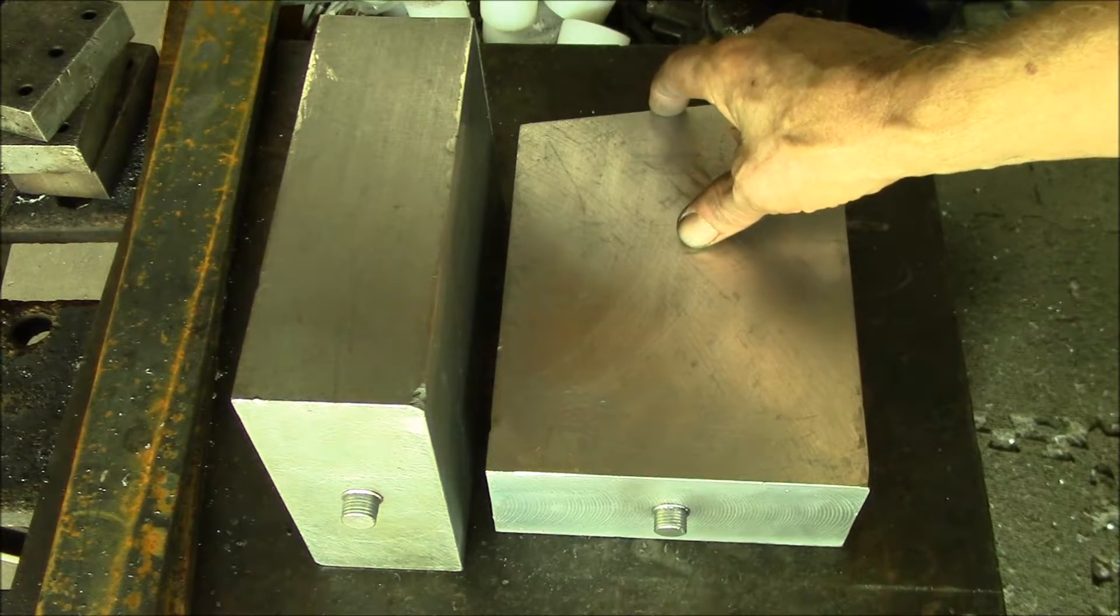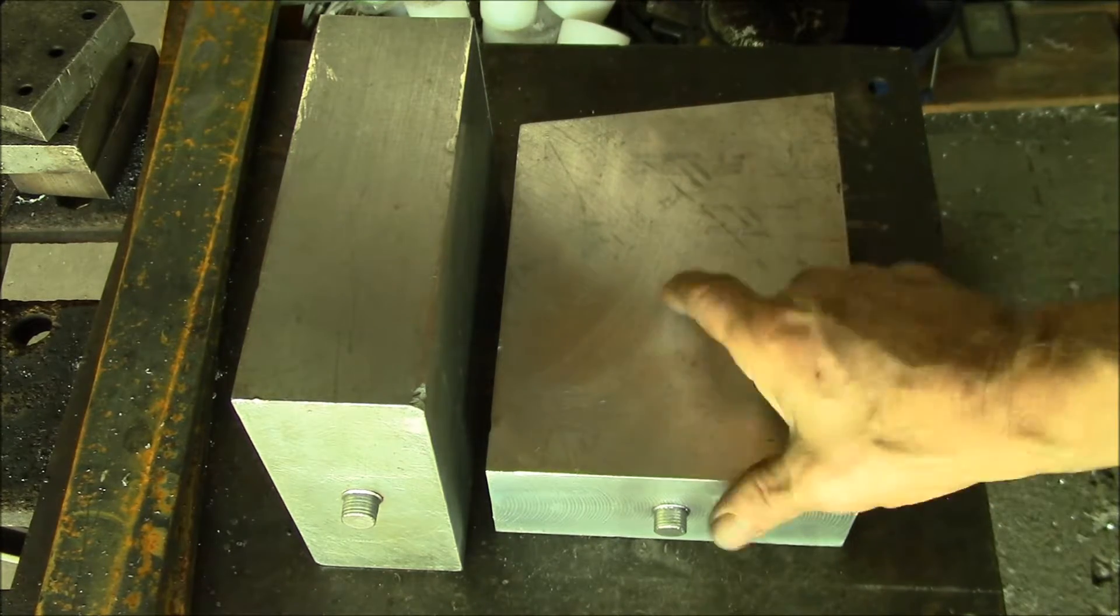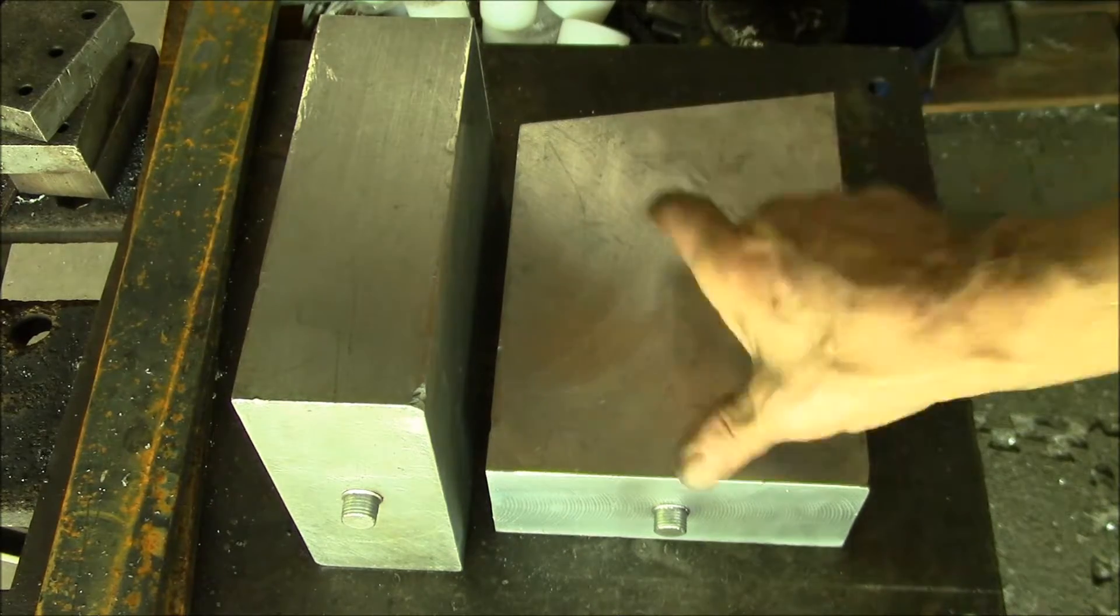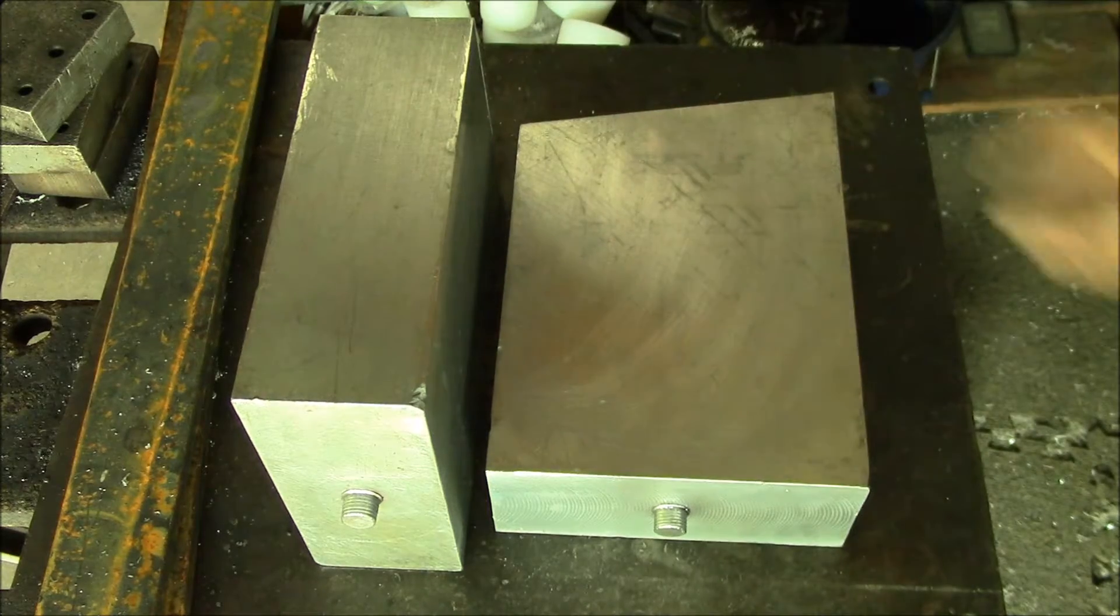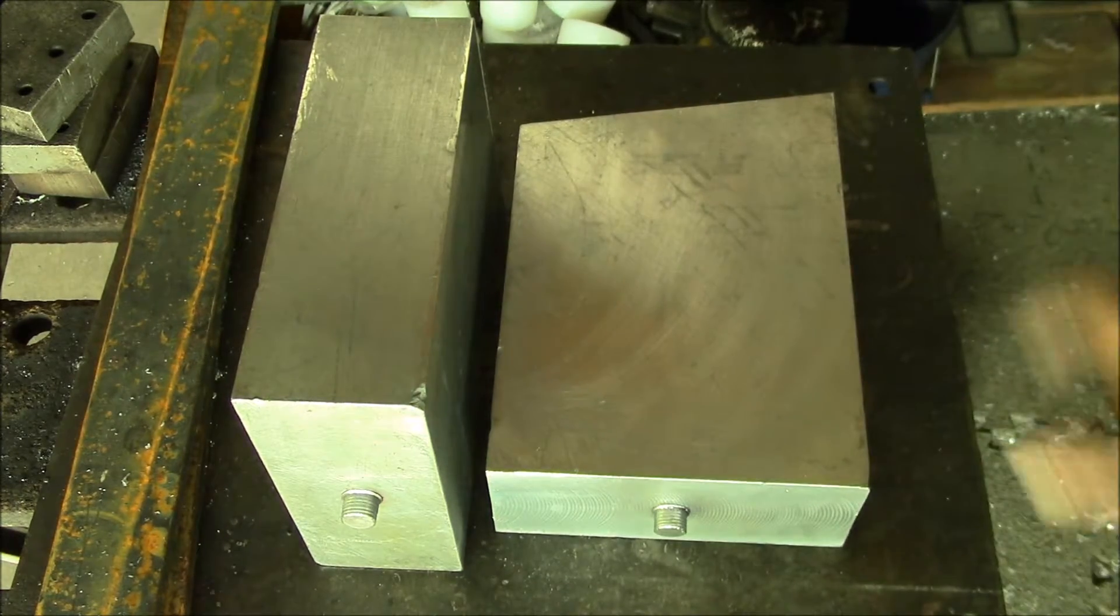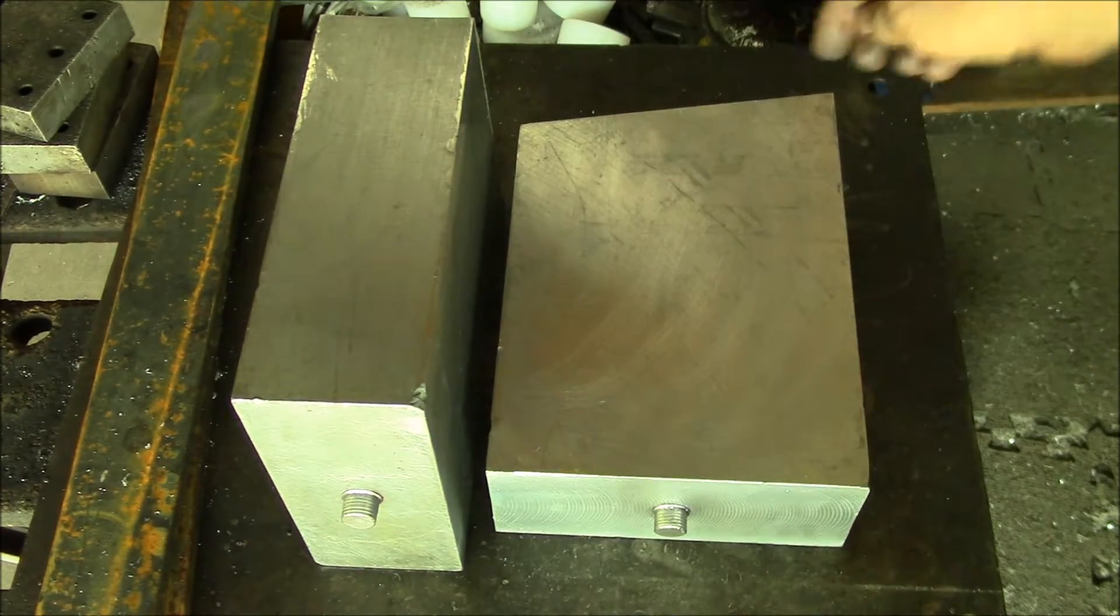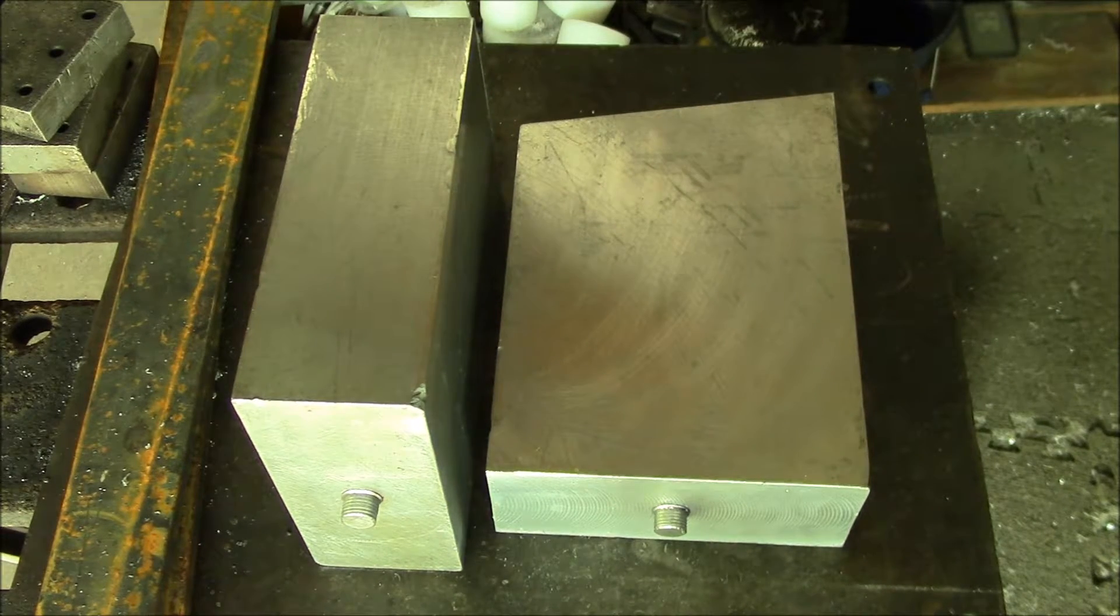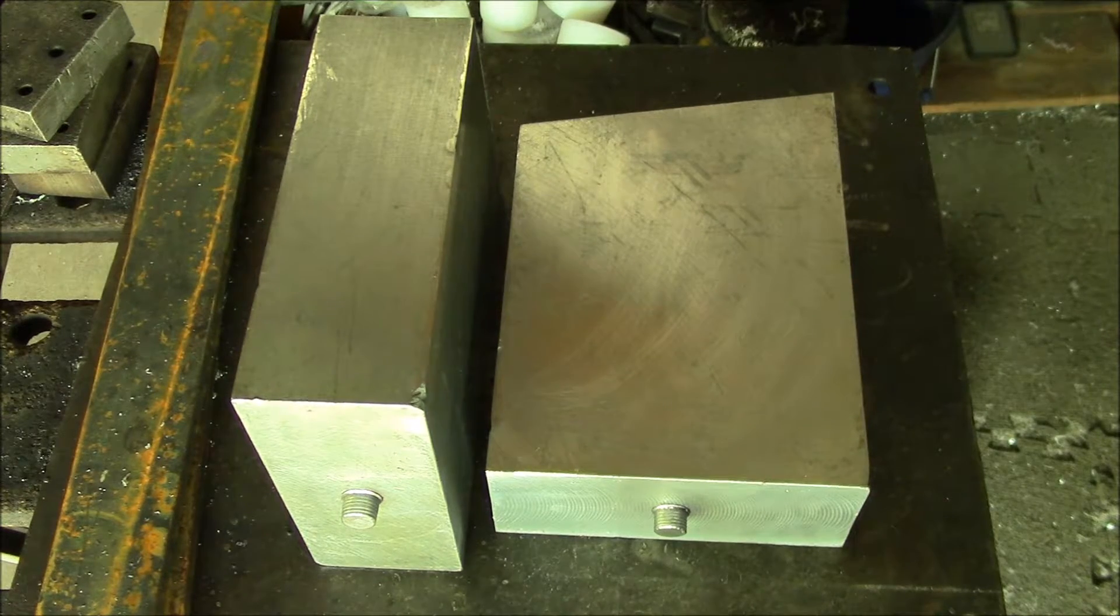He wants to raise the rear by that 2 and a half inches, so he needs 8 inch tall blocks and then needs to change the pinion angle on the axle. So these blocks will do both things for him - it gives him another 2 and a half inches of lift so his truck is level, and then the angle here will correct his pinion angle. He's been to a number of shops and they say that's impossible, you can't do that. Well, there you go.